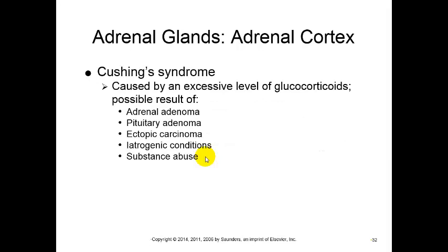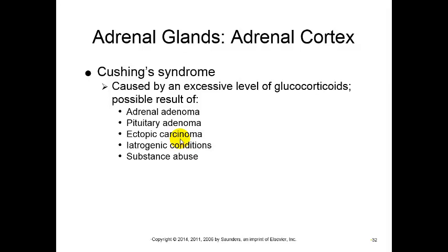With the cortex or outer portion of the adrenal gland, you can see Cushing's syndrome, which can be caused by excessive levels of glucocorticoids. These hormones are over-produced due to several reasons: an adrenal adenoma - a tumor in the adrenal gland - a tumor from the pituitary gland sending the signal for the adrenal gland to secrete glucocorticoids, an ectopic carcinoma where cancerous tissue elsewhere in the body produces glucocorticoids, or iatrogenic conditions or substance abuse.